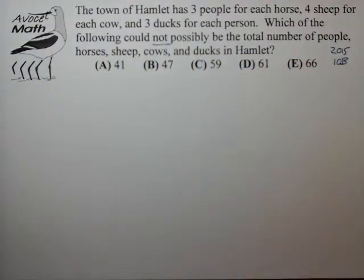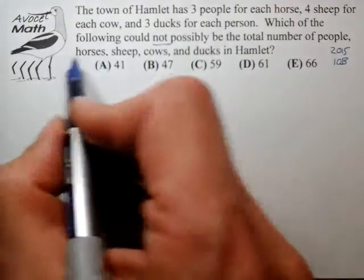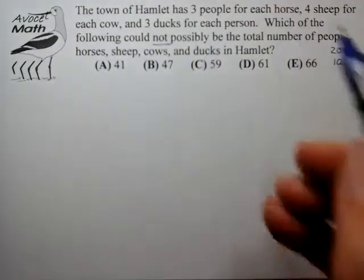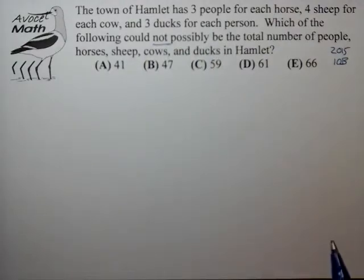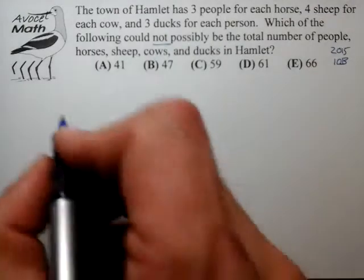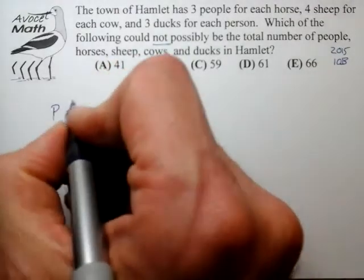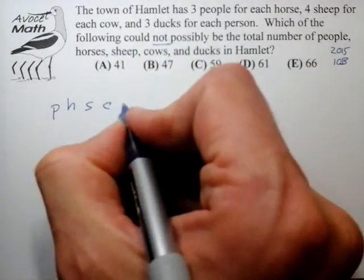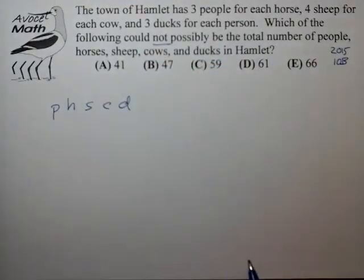You know, I'm not aware of any type of AMC problem where they would use categories such as, you know, people, porcupines, pumpkins, peppercorns. You know, they just tend not to do that. They try to make it easier for you to symbolize the problem. So let's go ahead and use the symbols of P, H, S, C, and D that is suggested kind of naturally from the phrasing of the problem.